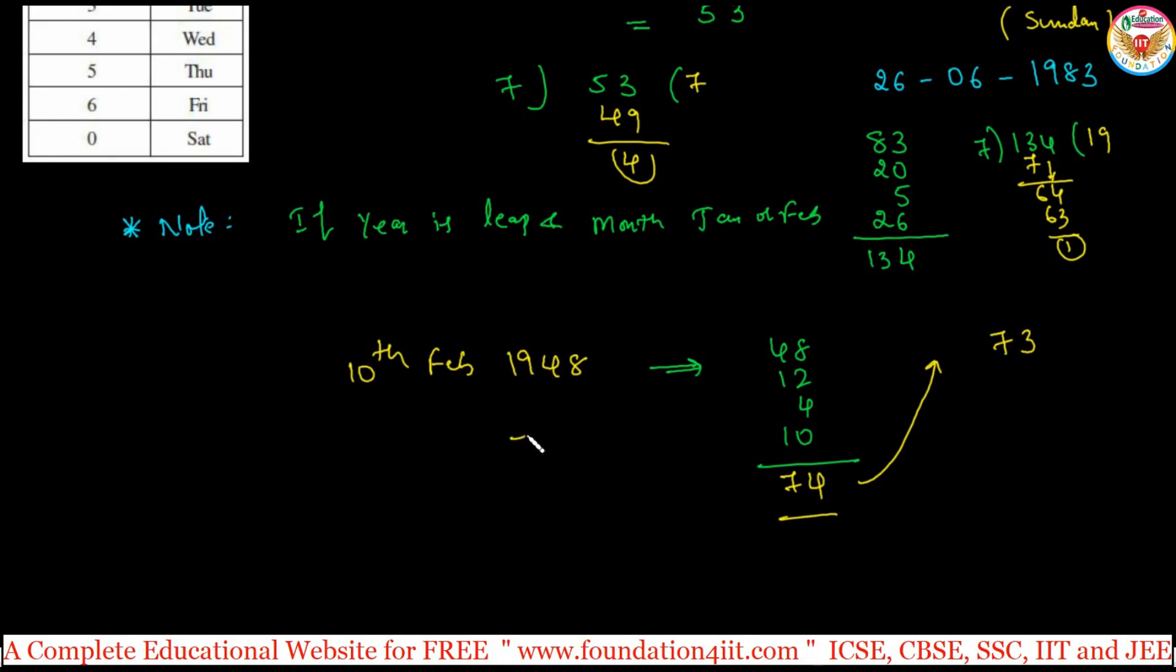Or take 74 divided by 7. 7 times 10 is 70, remainder is 4. Actually 4 is Wednesday, but you are supposed to take Tuesday. If you reduce one number from here and divide by 7, 73 divided by 7, remainder is 3, which is Tuesday.